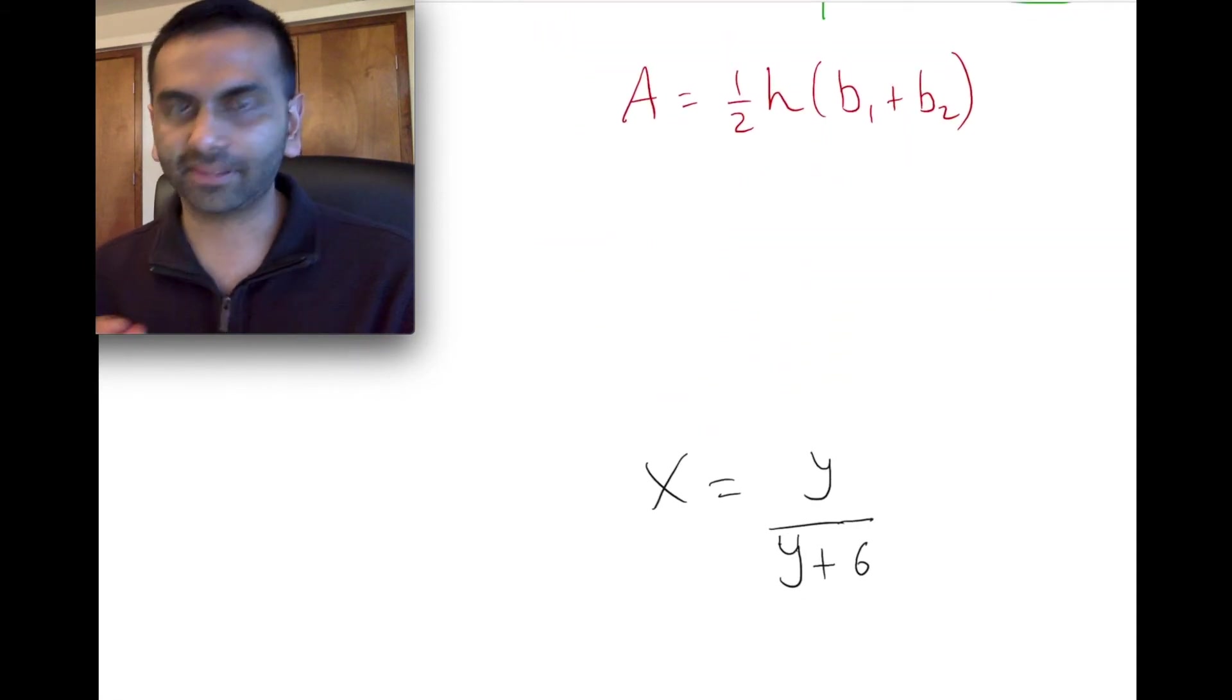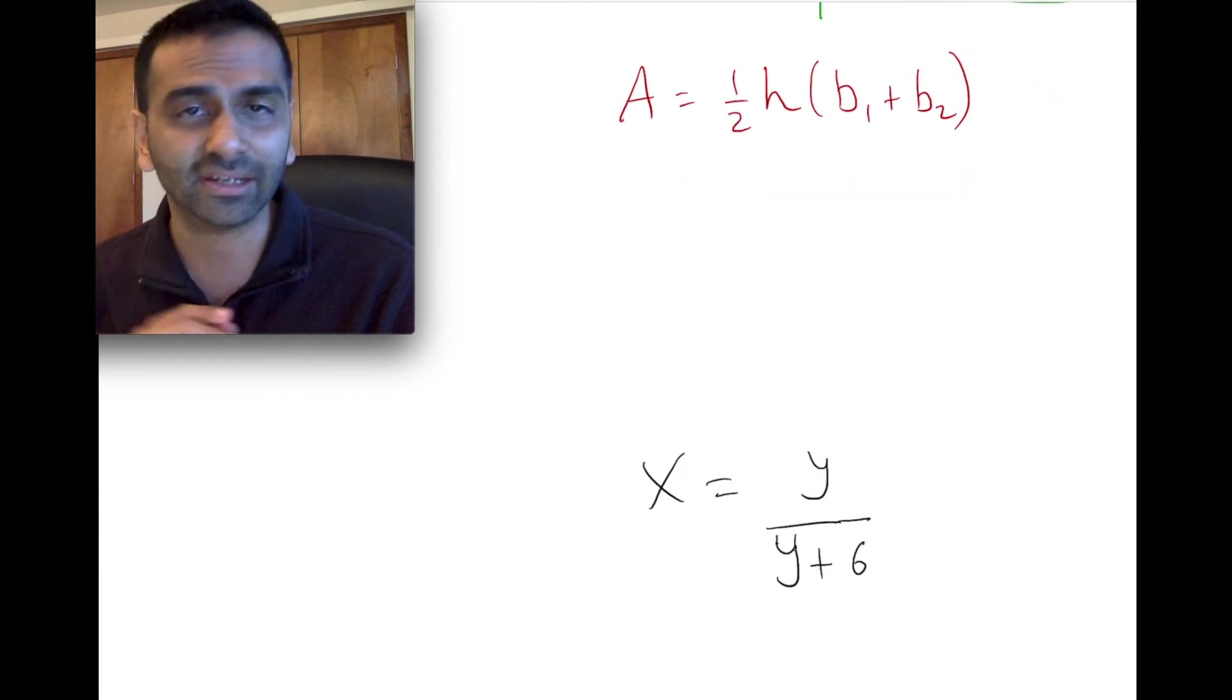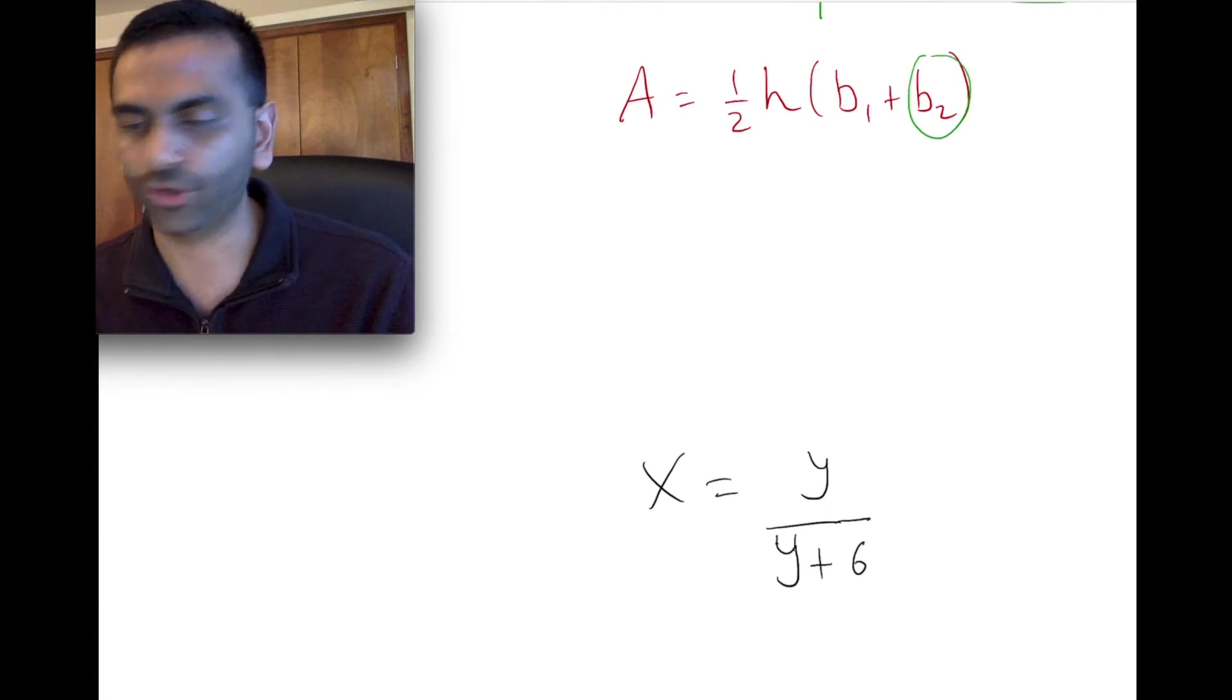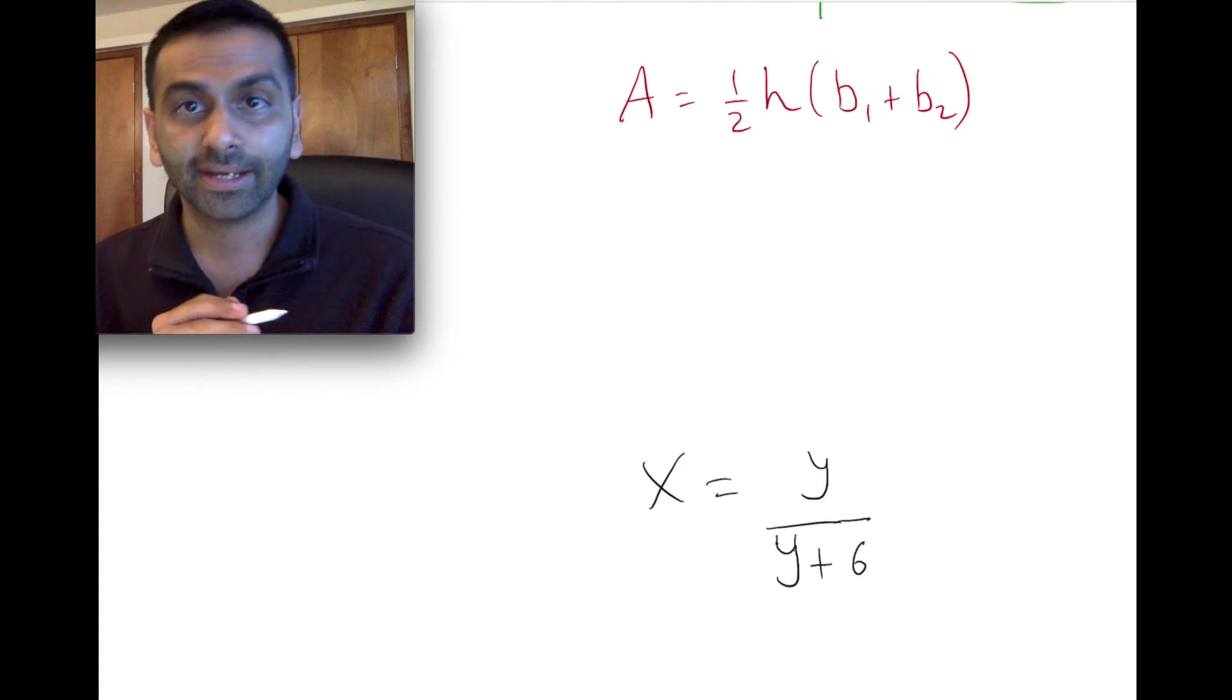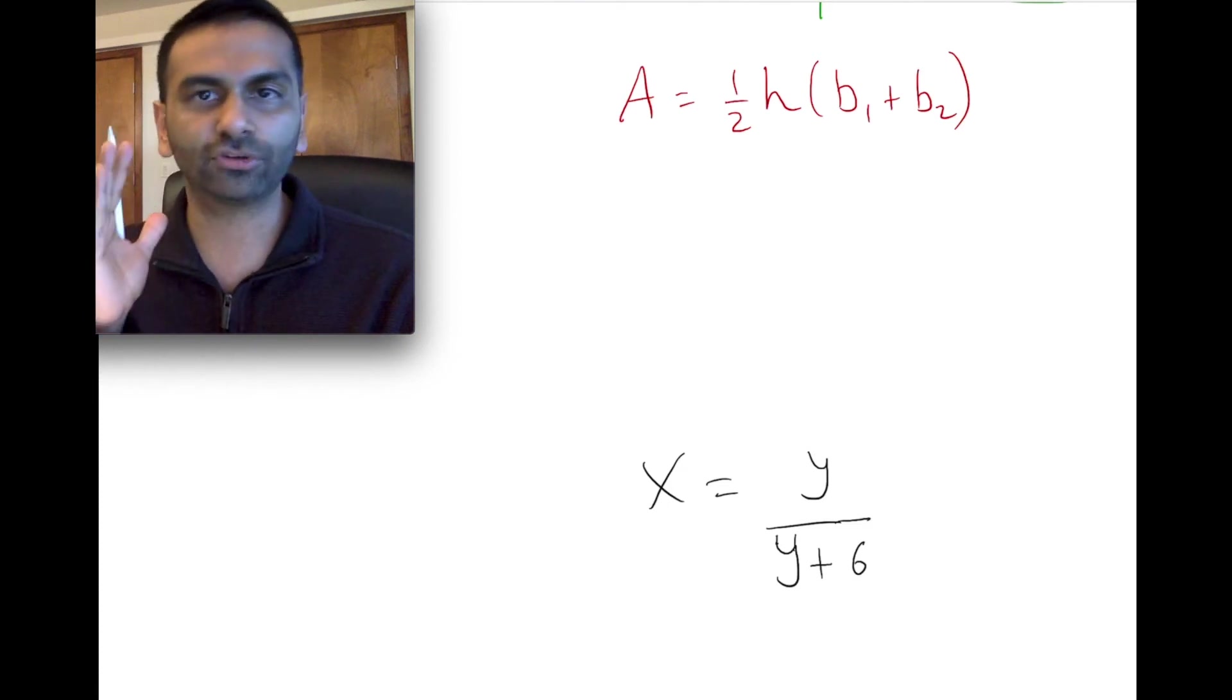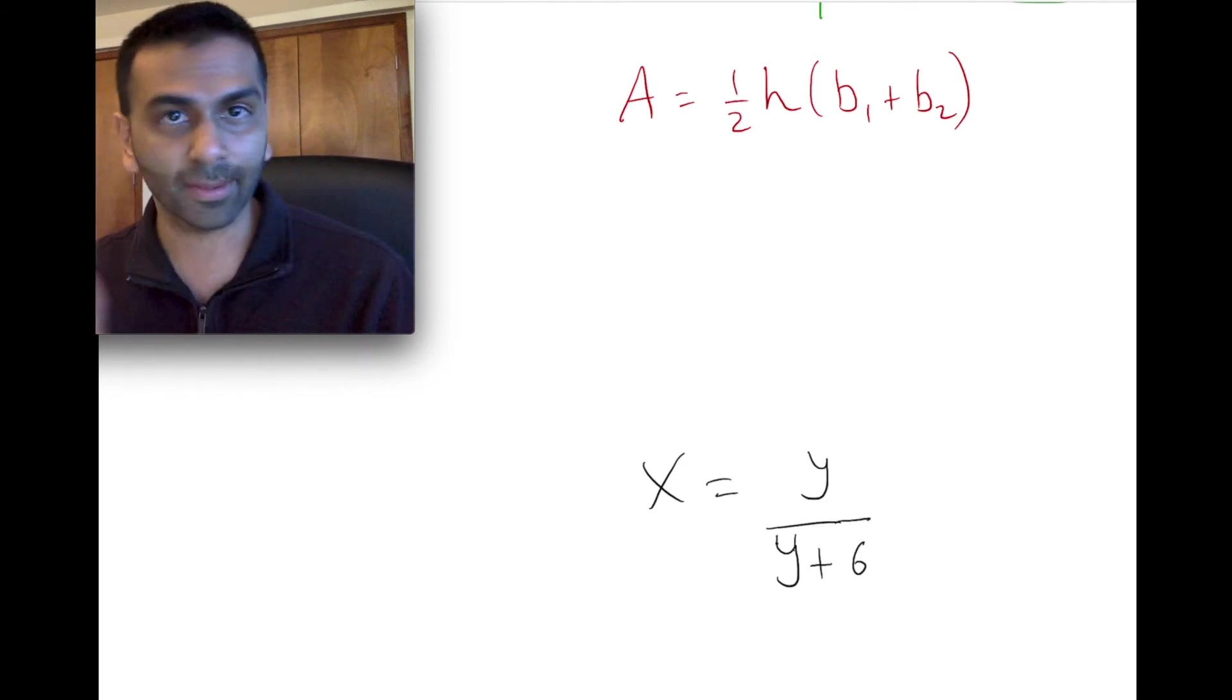Let's take a look at another example. Let's say this is your problem. This, by the way, is the formula of the area of the trapezoid. Well, let's say you wanted to solve for B2. That's what the question is. Solve for B2 in this formula. Now, again, our goal, big picture goal, is we want to get all the terms with the B2 by itself on one side, and all the terms without a B2 on the other side, and then solve for B2.